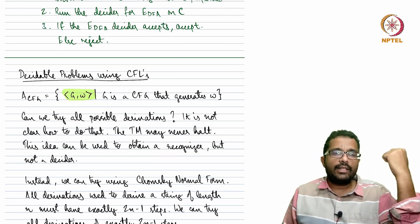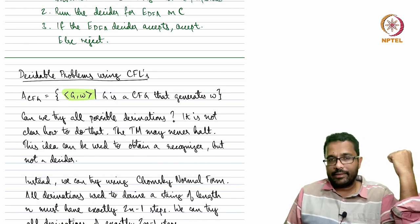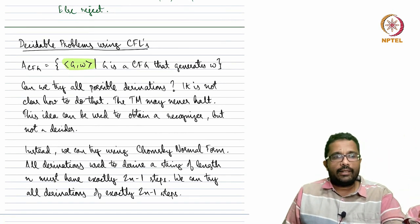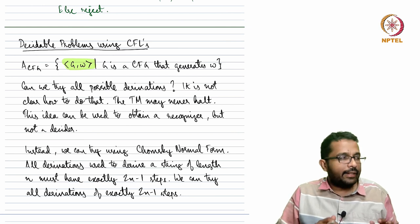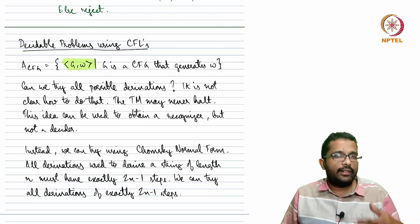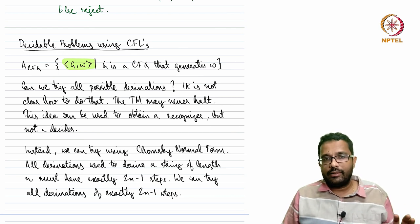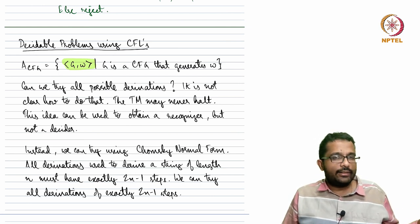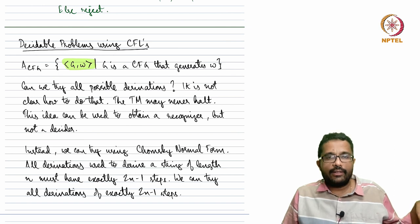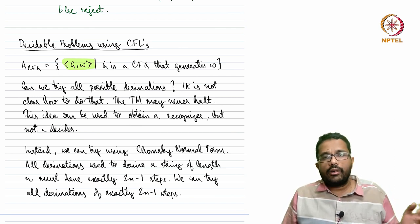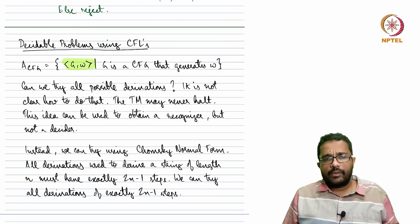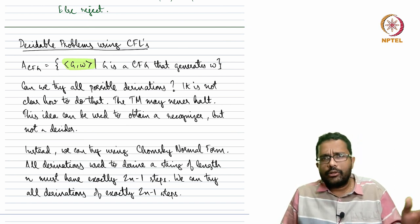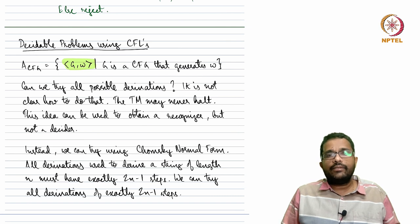This idea may result in a recognizer but cannot provide a decider. Because if W is not generated by G, there is no clear way to reject. What we need is some guarantee: if you try these possible derivations and never got W, you are never going to get W. If that guarantee exists, then we can build a decider.